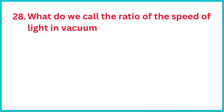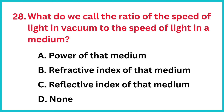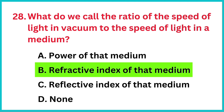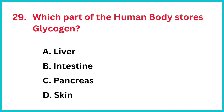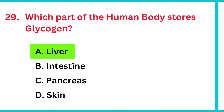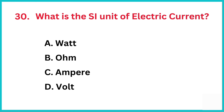What is the ratio of the speed of light in vacuum to the speed of light in a medium called? The correct answer is option B: refractive index of that medium. Which part of the human body stores glycogen? The correct answer is option A: liver. What is the SI unit of electric current? The correct answer is option C: ampere.